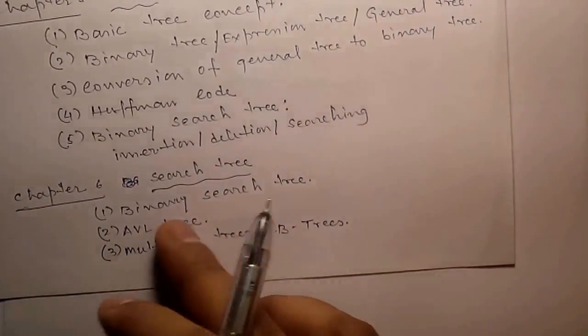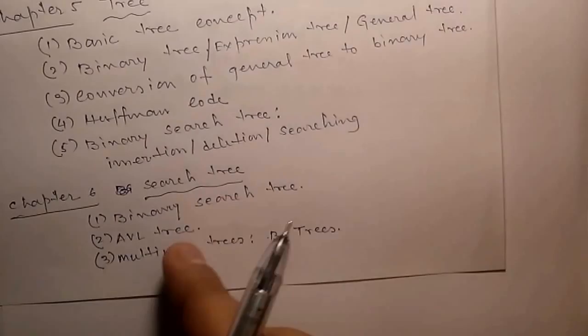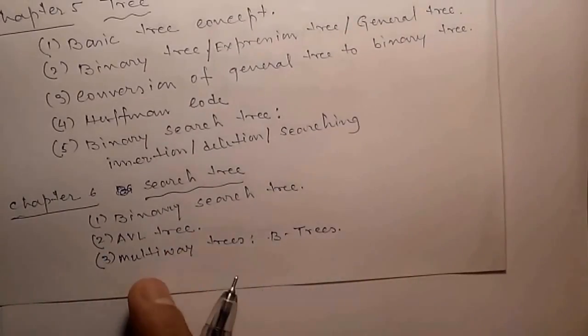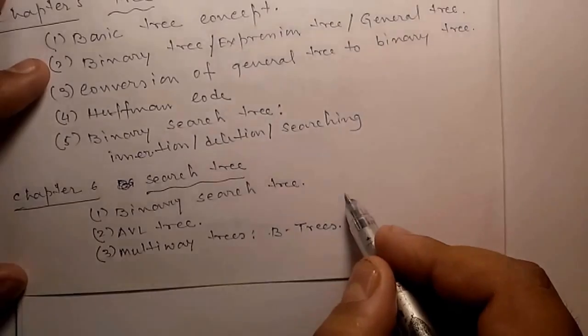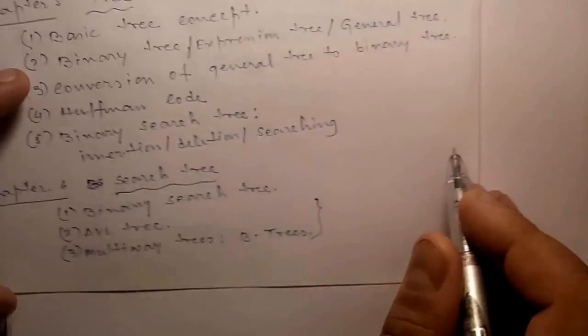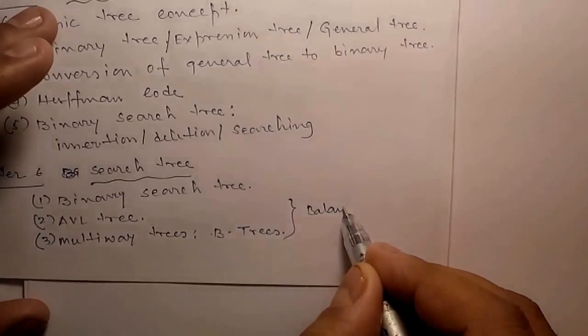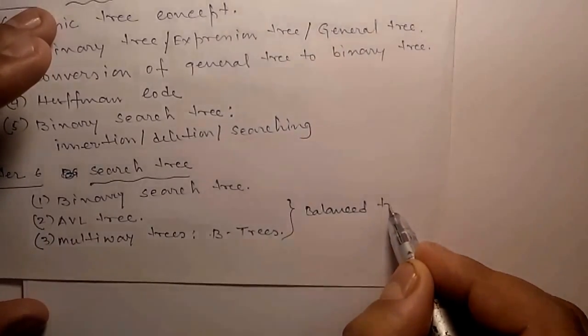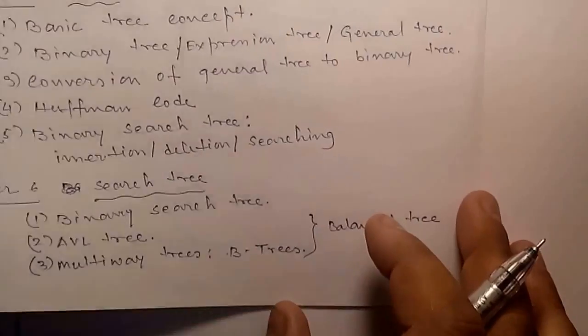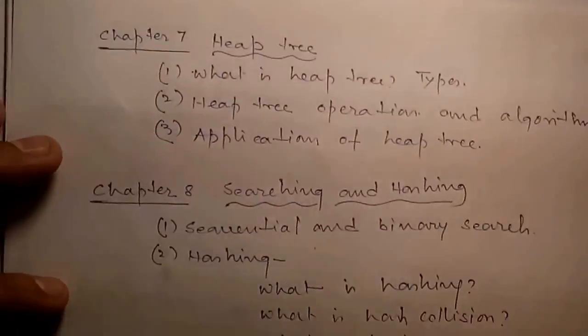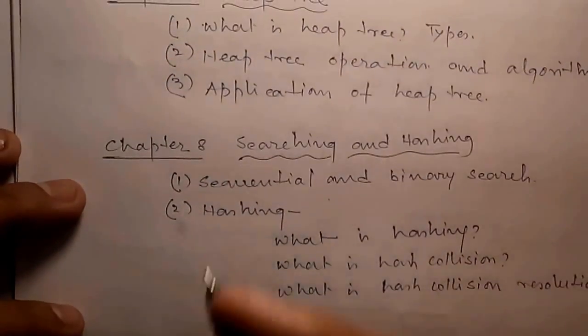Binary search tree, AVL tree, multi-way tree. These are balanced trees. We will talk about what is balanced tree. Next, heap tree. In Chapter 7, heap tree: what is heap tree, types, heap tree operations and algorithms, application of heap tree.